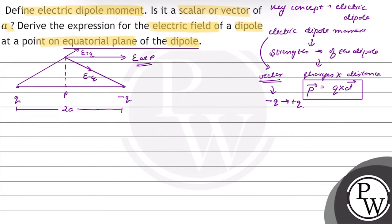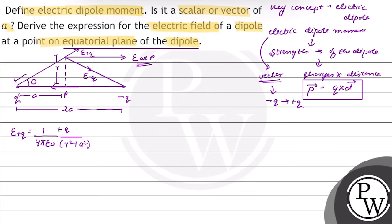The electric field at point P makes angle theta, and the electric dipole moment direction is from minus Q to plus Q charge. The electric field due to plus Q charge equals 1 over 4 pi epsilon-not, times plus Q upon r squared plus a squared. The length here — the hypotenuse — equals the square root of r squared plus a squared. The same applies for the minus Q side; the hypotenuse equals root of r squared plus a squared.